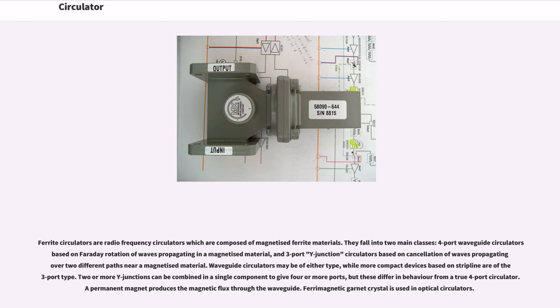4 port waveguide circulators based on Faraday rotation of waves propagating in a magnetized material, and 3 port Y junction circulators based on cancellation of waves propagating over two different paths near magnetized material. Waveguide circulators may be of either type, while more compact devices based on stripline are of the 3 port type. Two or more Y junctions can be combined in a single component to give four or more ports, but these differ in behavior from a true 4 port circulator. A permanent magnet produces the magnetic flux through the waveguide. Ferromagnetic garnet crystal is used in optical circulators.